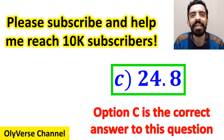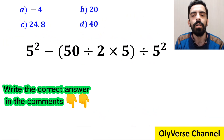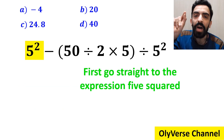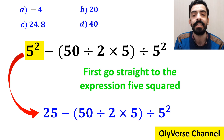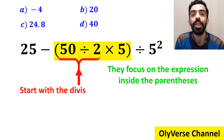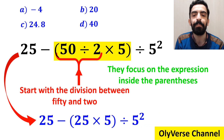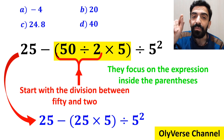But we were tricked — that's not the correct answer. Some other people, when solving this question, first go straight to the expression 5 squared and simplify it to get 25 minus 50 divided by 2 times 5 inside the parenthesis, then divided by 5 squared. In the next step, they focus on the division between 50 and 2 inside the parenthesis, simplifying to 25 minus 25 times 5 inside the parenthesis, divided by 5 squared.